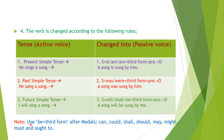Note: use 'be' plus third form after modals. Apart from 'will' and 'shall,' there are also other modals: can, could, shall, should, may, might, must, and 'are to.' With any modal in passive voice, use 'be' plus third form of verb. For example: 'I can sing a song' becomes 'A song can be sung by me.' And 'I must sing a song' becomes 'A song must be sung by me.'